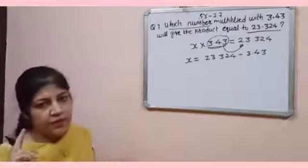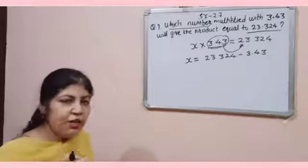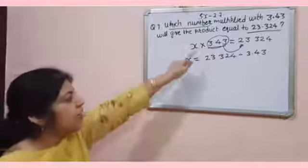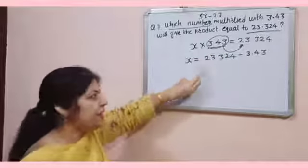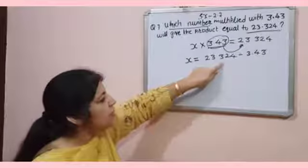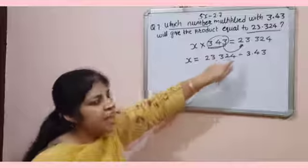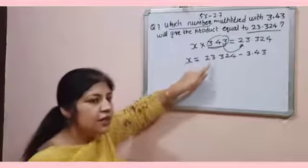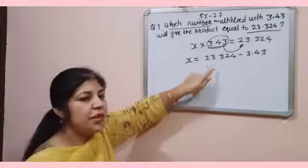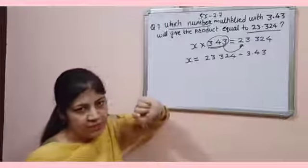Now it's your choice. Either you can convert decimal to fraction and then solve, or converting decimal means dividend as well as divisor in like form. Means make both like decimals.